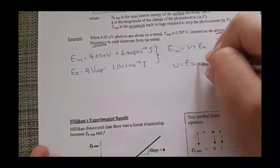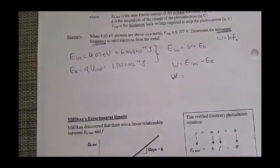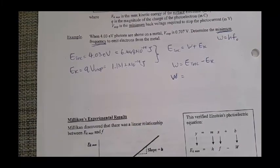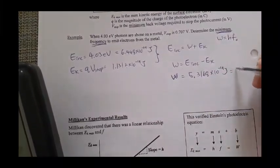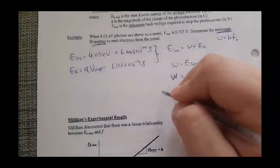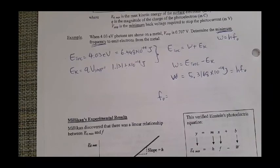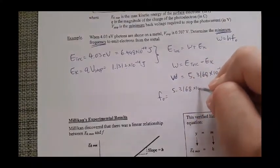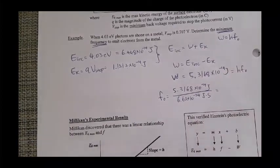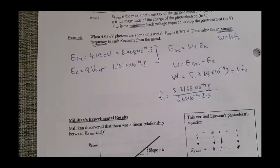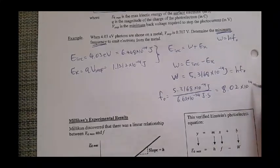Work function, if I rearrange in that perspective, is difference between those two energies. So work function is equivalent to 6.448 times 10 to the power of negative 19 minus the previous one, which is 5.3168 times 10 to the power of negative 19 joule. And that is equivalent of hf_0. So to find out my minimum frequency, threshold frequency to emit electron from this certain metal, we are basically isolating our Planck constant. Then we are going to get 8.0 times 10 to the power of 14 Hertz.